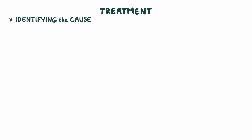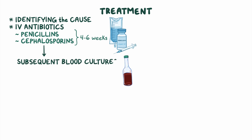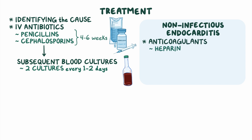Treatment of endocarditis begins with identifying the cause. Infectious endocarditis is treated with IV antibiotics like penicillins or cephalosporins, usually from four to six weeks, in order to prevent relapse. To confirm the treatment was successful, subsequent blood cultures are required, usually two cultures every one to two days. Clients with non-infectious endocarditis are treated with anticoagulants like heparin, as well as addressing the underlying cause.